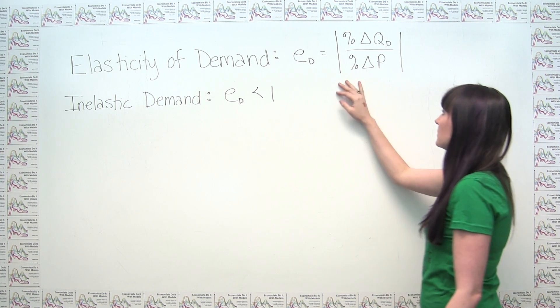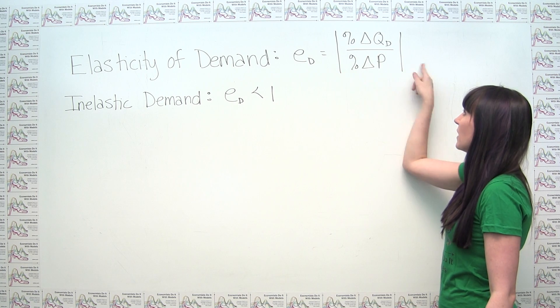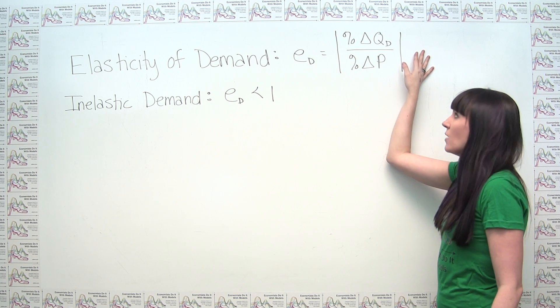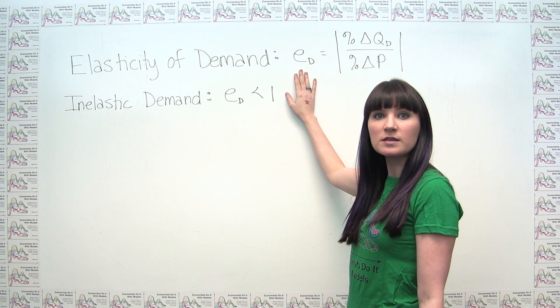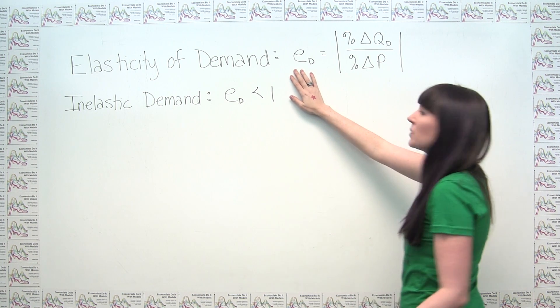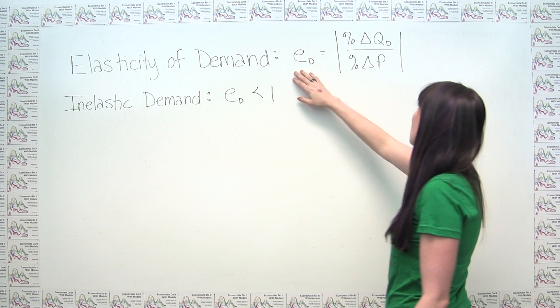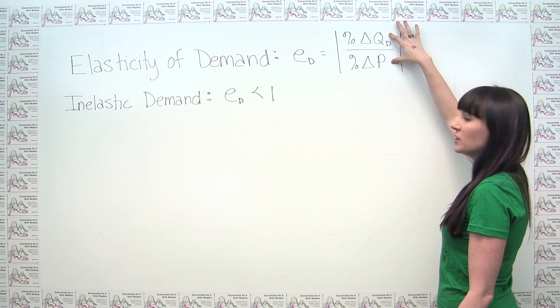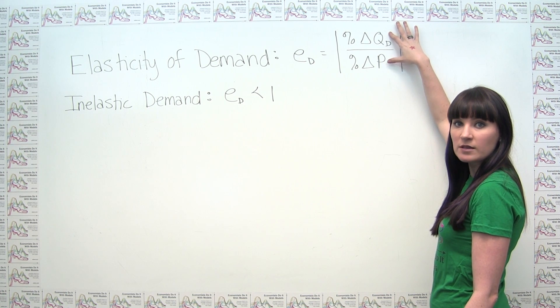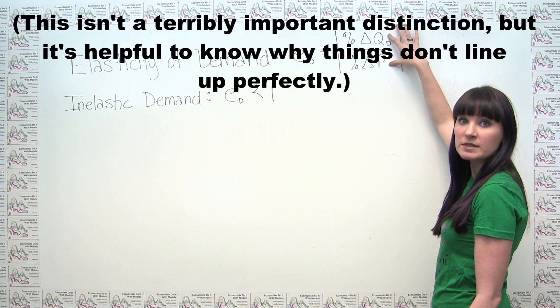Now, sometimes your textbook might not take the absolute value here, in which case you would always be getting a negative number for price elasticity of demand because demand curves slope downwards. The percent change in quantity demanded and the percent change in price are obviously always going to move in opposite directions.